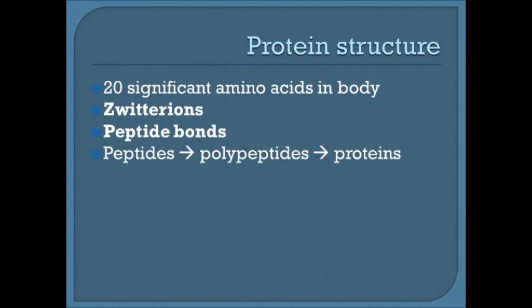The monomers of proteins are amino acids. There are about 20 significant amino acids in our body, nine of which are essential — meaning we cannot make them ourselves and must obtain them through diet. Some amino acids are known as zwitterions: molecules that have both a positive and negative charge, but a net charge of zero. Amino acids are held together by peptide bonds to form polypeptides, and once a polypeptide gains a unique function with a unique name, it becomes a protein.